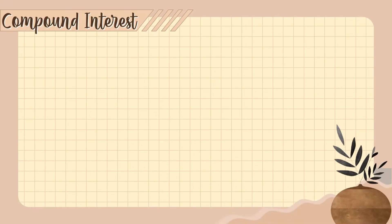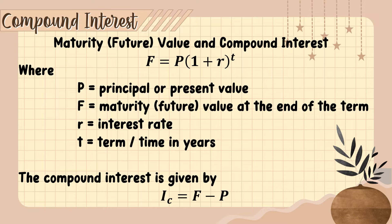This is compound interest. The maturity or future value of compound interest is given by F equals P times the quantity 1 plus r raised to t. Where P is the principal or present value, F is the maturity or future value at the end of the term, r is the interest rate, and t is term or time in years.